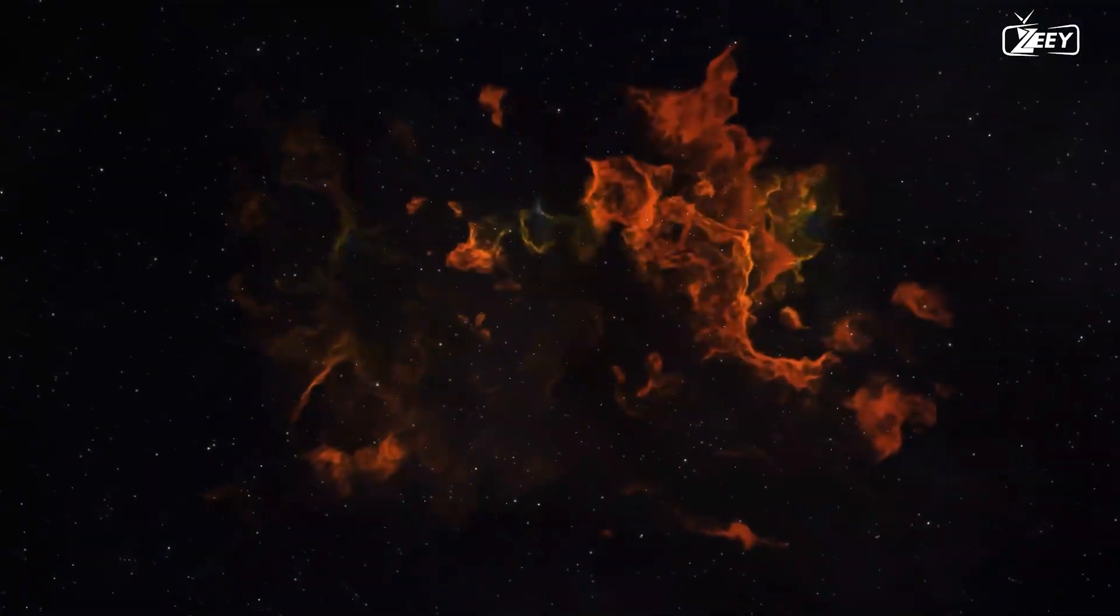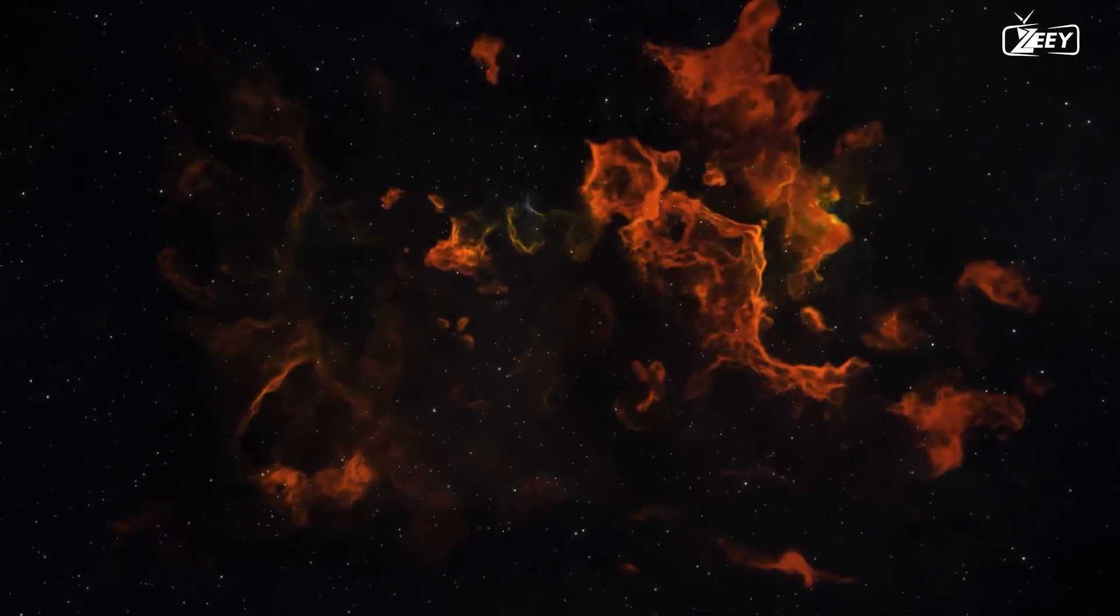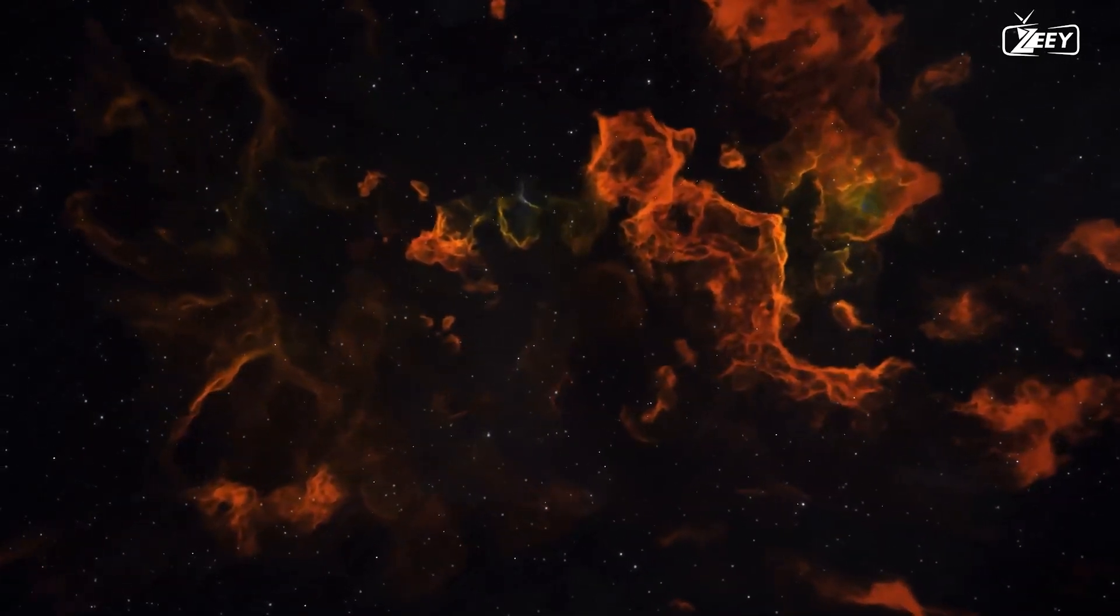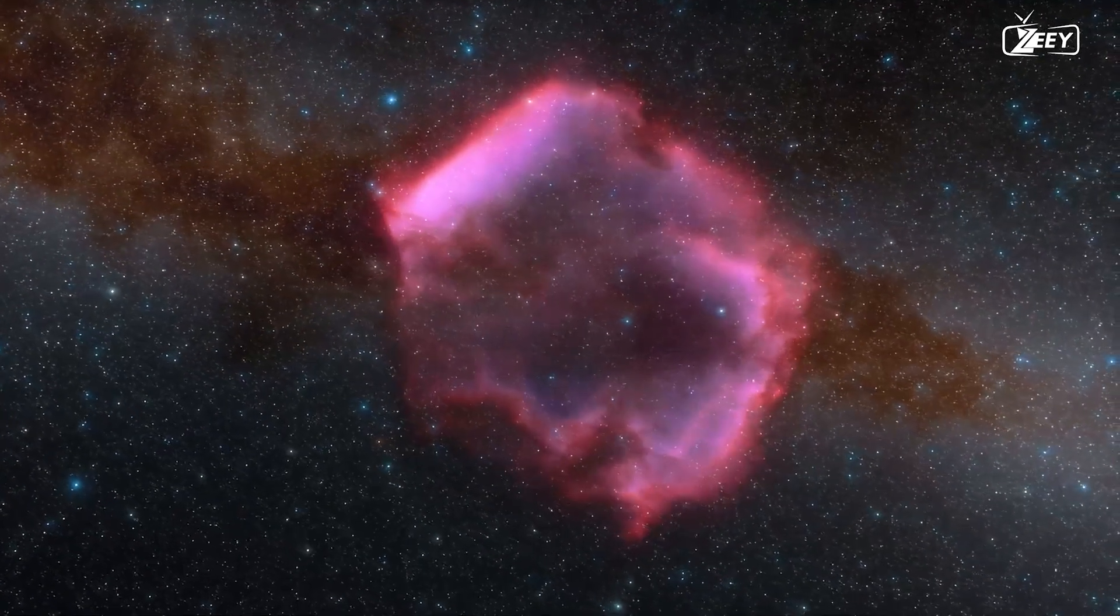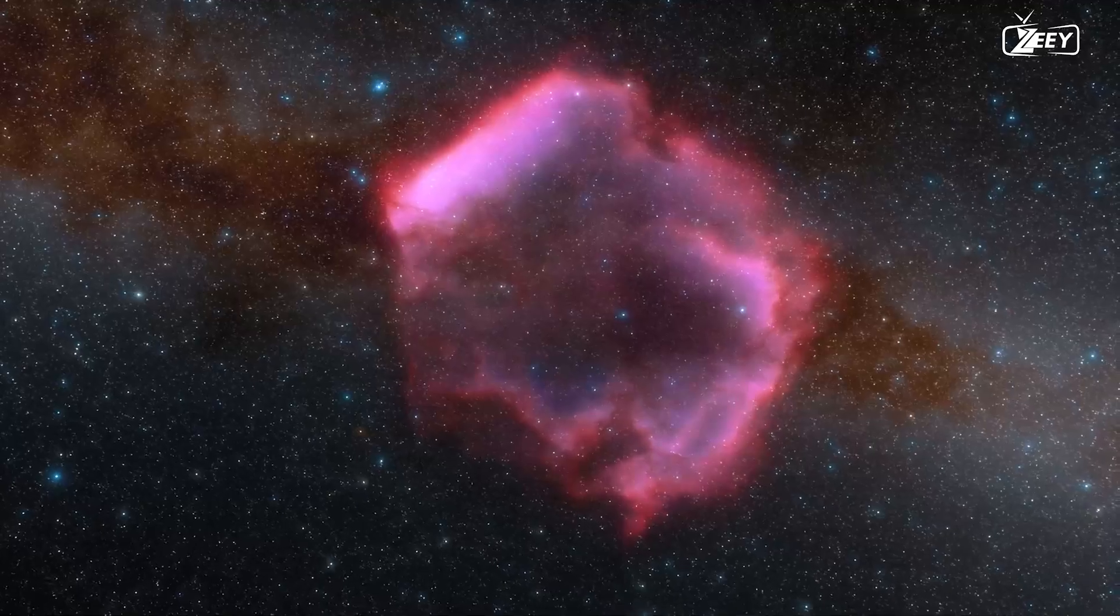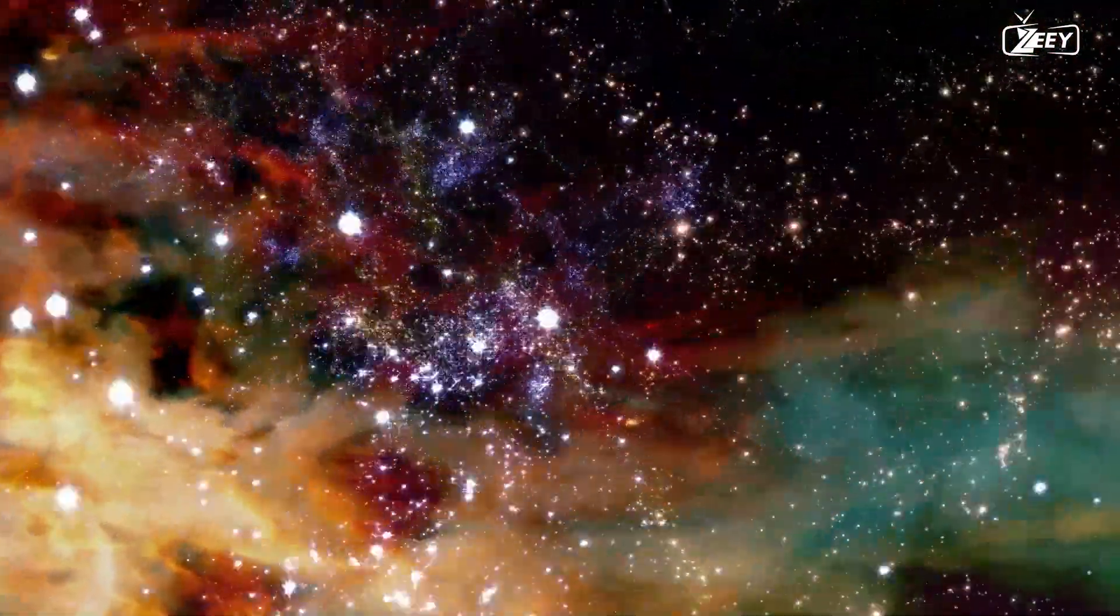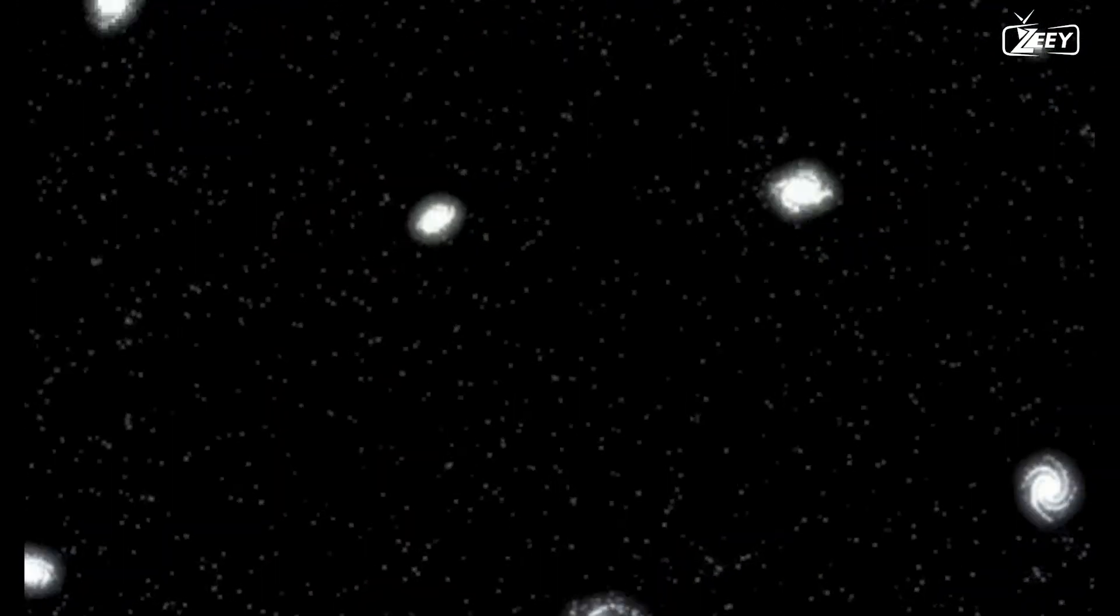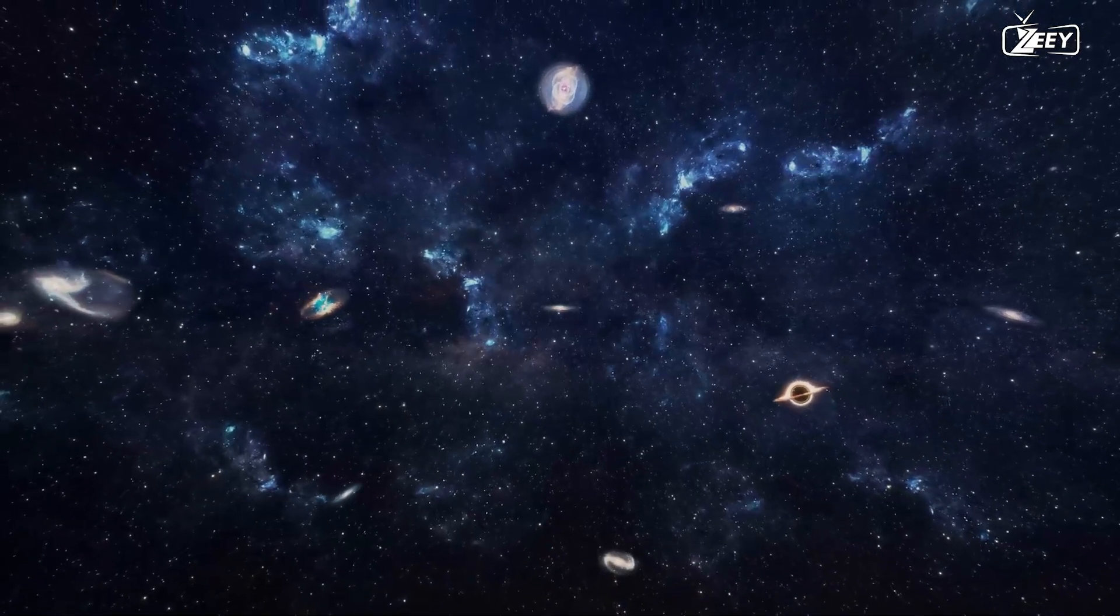The redshift of far-off galaxies also fits the Big Bang theory. By the time it reaches us, the light from galaxies has been distorted. The galaxies that cause this redshift are relocating away from our galaxy. Observations indicate that the majority of the universe is expanding apart. Galaxies would be moving towards one another if time could be turned back. Everything in the universe would have been located in one location if you could travel back in time far enough, as predicted by the Big Bang theory.